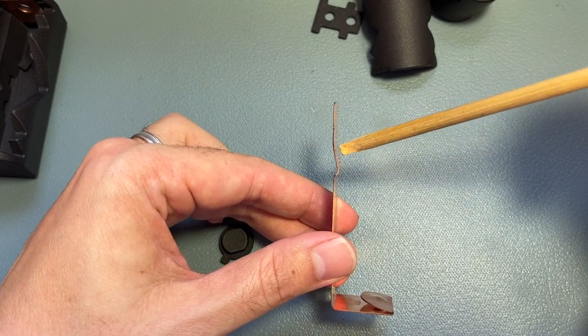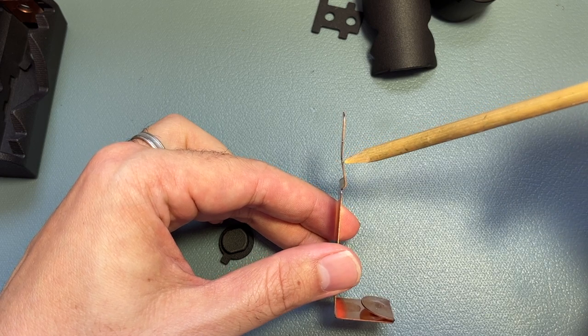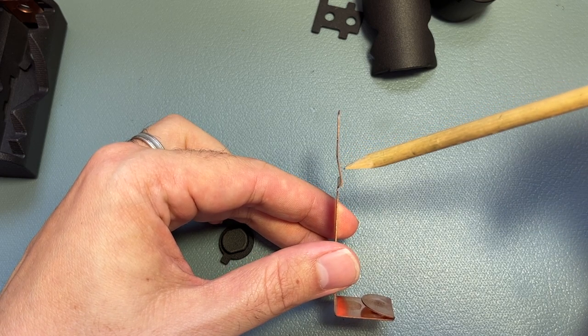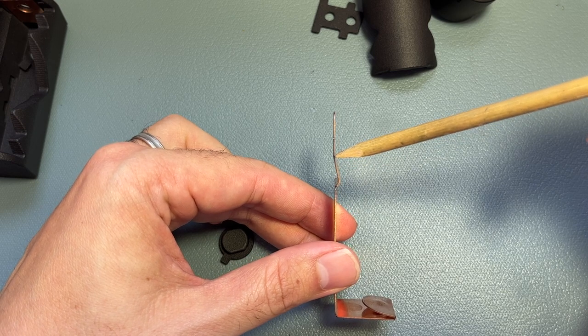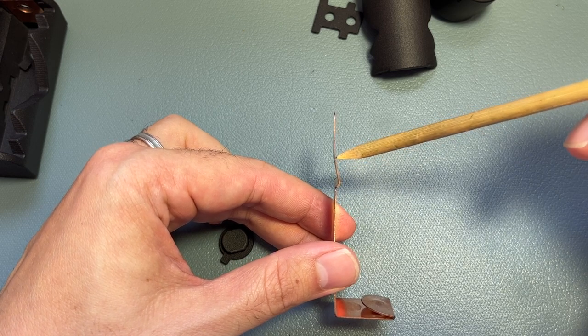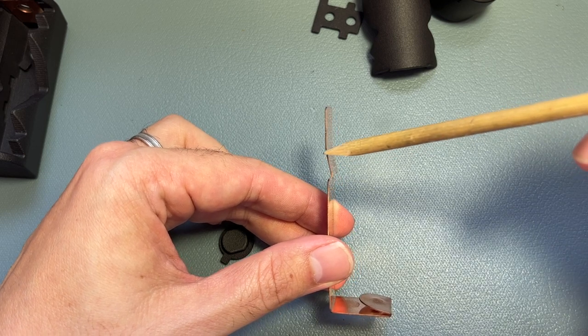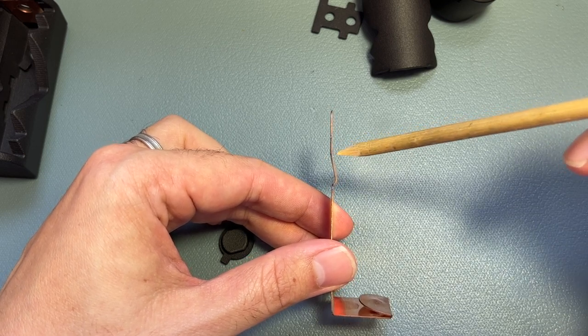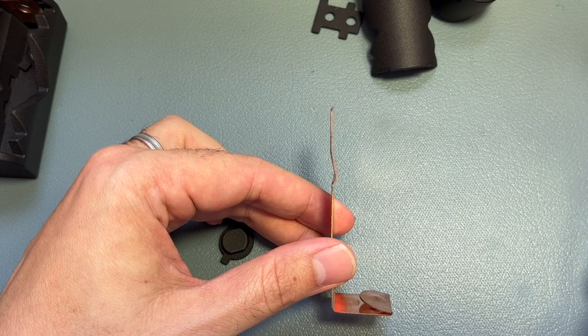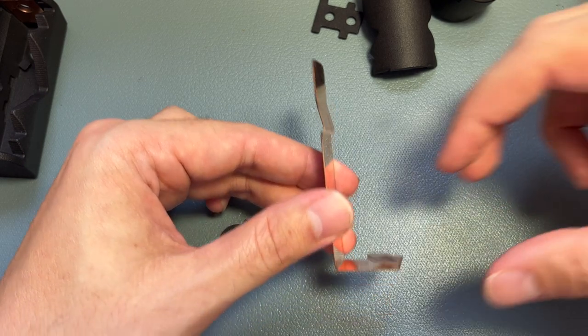If you do choose to manipulate these bends, be very careful and just know that something that is not really visible to the naked eye, a change in the bends that is not visible to the naked eye, can make a pretty big difference to how the button feels. So that's the bottom contact.